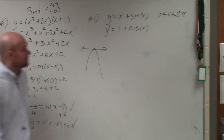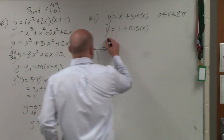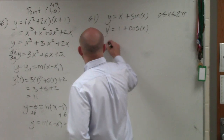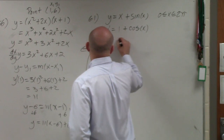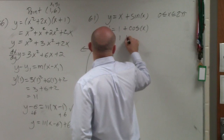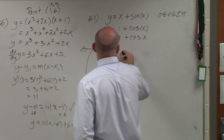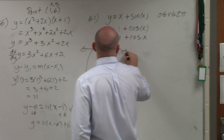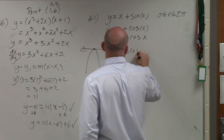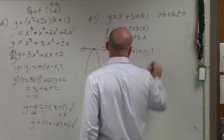Now we just need to set that equal to 0: 0 equals 1 plus cosine of x. Therefore, cosine of x equals negative 1.